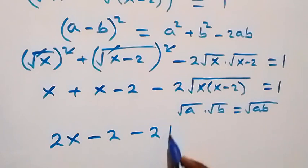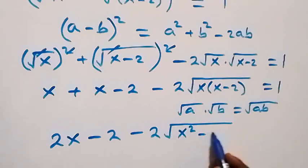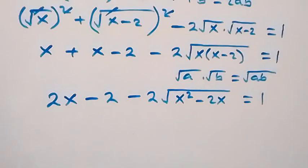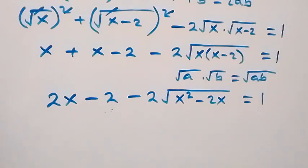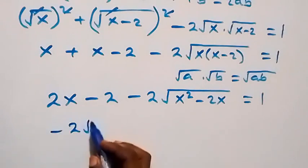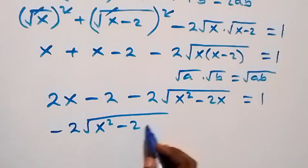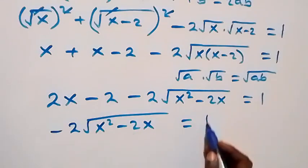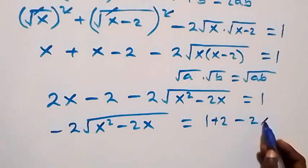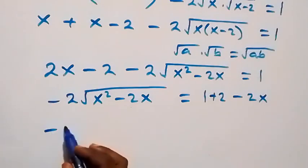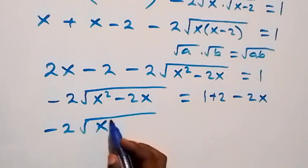And here we have x plus x, that's 2x, then minus 2, minus 2 times √(x(x-2)). When we expand the bracket we have x² minus 2x, then equals to 1 on this side. We can take everything here and separate 2x and minus 2 to the other side, and we are left with minus 2 times √(x² - 2x), which is equal to 1 minus 2 plus 2x, giving us 3 minus 2x.